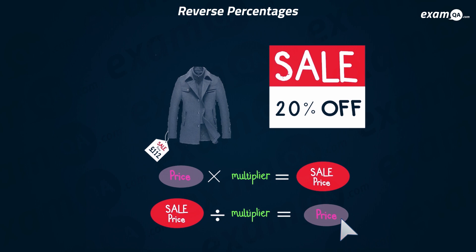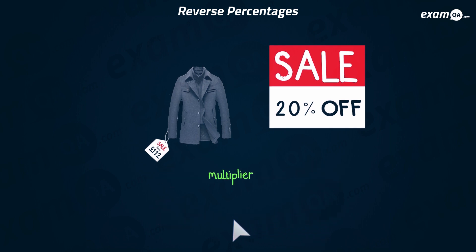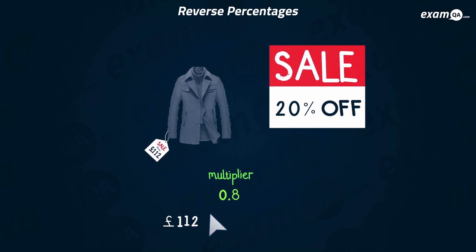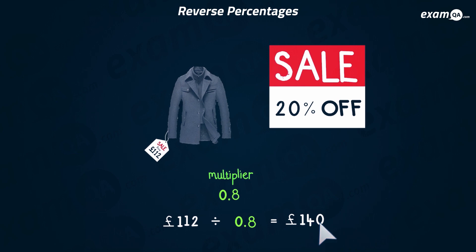If you're good at algebra it should make total sense — to get the sale price we times by the multiplier, so to go back to the original price you divide by the multiplier. It was a 20% decrease, so the multiplier they used was 0.8. We take the sale price, 112 pounds, and divide it by this multiplier, giving us 140 pounds. So I'm going to be cheeky and tell my friends I bought it for 140 pounds!